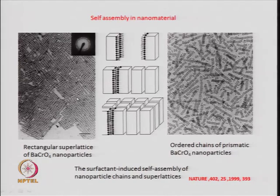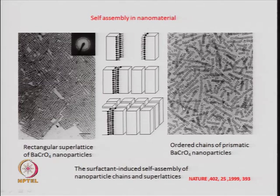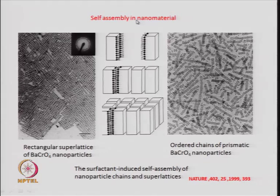This kind of rectangular superlattice can occur in some cases; depending on conditions you may have more one-dimensional organization where the arrangement is along only one direction — not forming a 2D lattice. You get a chain of nanoparticles or nanocrystals of barium chromate. These are examples of surfactant-induced self assembly of barium chromate nanocrystals, and depending on the surfactant you can change them into 2D layers or one-dimensional chain-like structures.